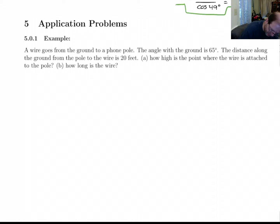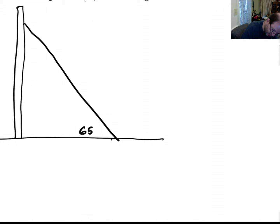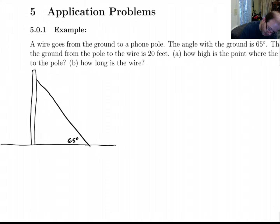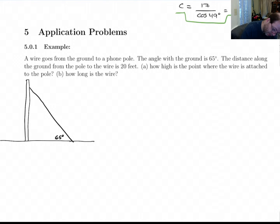Okay, so first up let's draw a picture of the situation. We've got the ground here, and here we've got a telephone pole. And there's a wire that's going from the pole down to the ground. Now what we're told is the angle that it makes with the ground is 65 degrees. They don't specify which angle, but it's got to be this one, because this one over here is bigger than 90. So that's 65 degrees, and the distance along the ground from the pole to the wire is 20 feet.